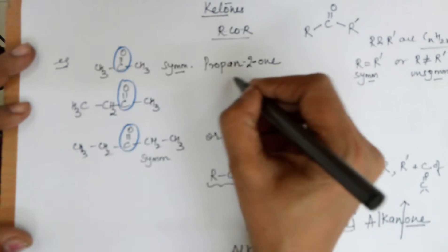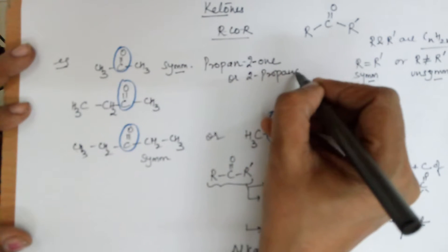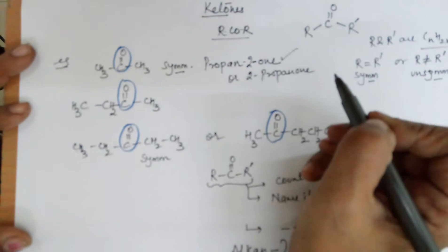In some books, it is also written as 2-propanone, which is also correct. But the latest way of naming ketones is this.